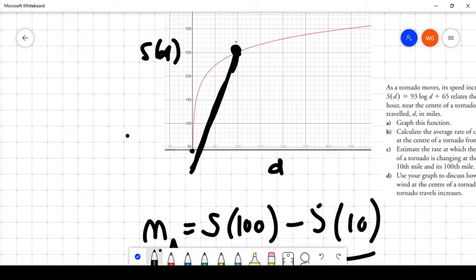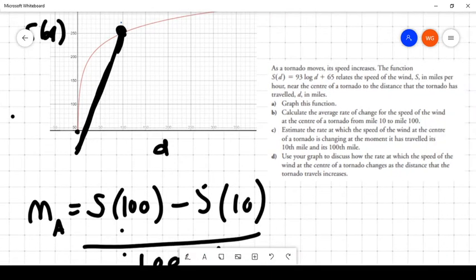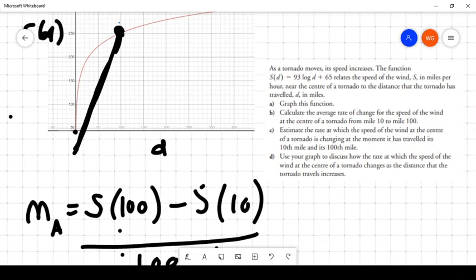So anyway, what's being referred to then is the slope of the graph between those two points, which approximately would be close to 1. So with that being said, what's the next question? Well, the next question is as follows. It says, estimate the rate at which the speed of the wind at the center of the tornado is changing at the moment it has traveled its 10th mile and its 100th mile. But we won't do both of those. Let's just do the 10th mile.